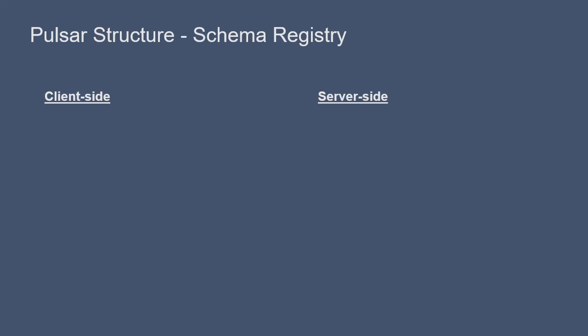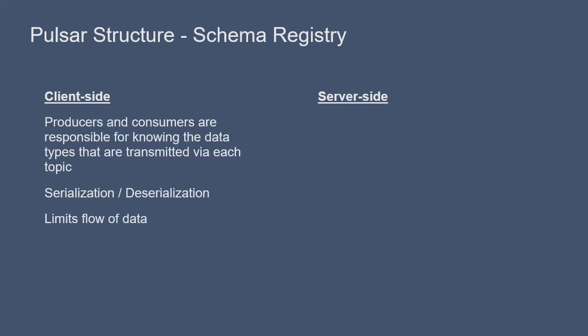Pulsar offers two different approaches to what's referred to as type safety. First, there's client-side. In the client-side approach, the producers and consumers are responsible for knowing the data types that are transmitted via each topic. Additionally, the producers and consumers are responsible for serializing and then deserializing messages.